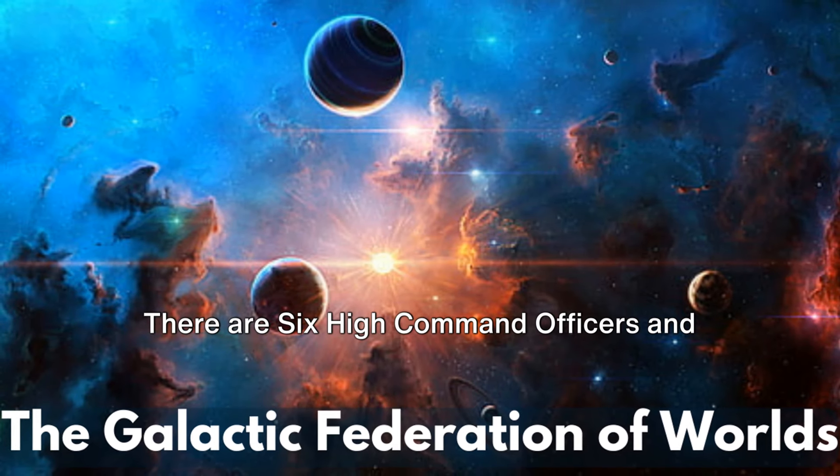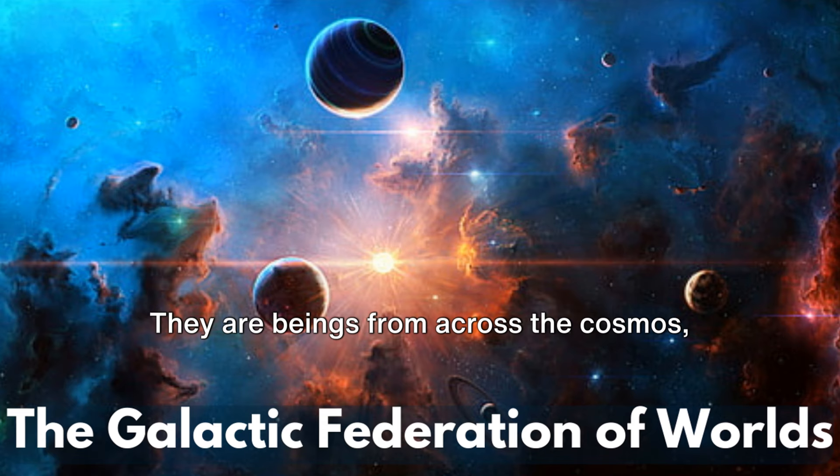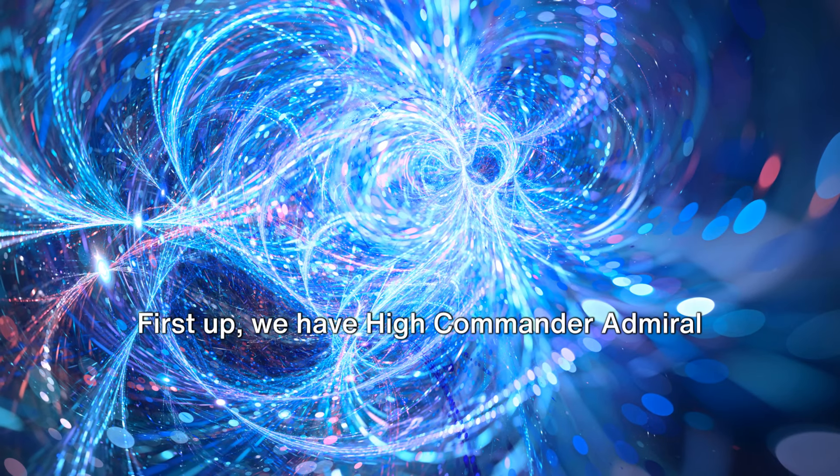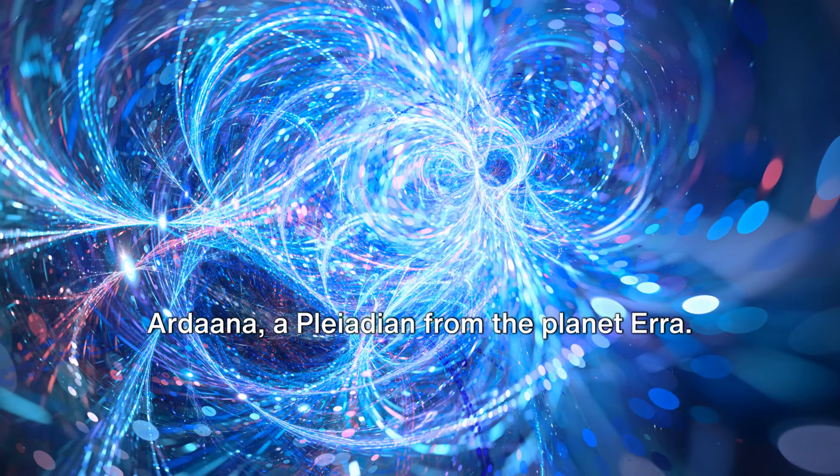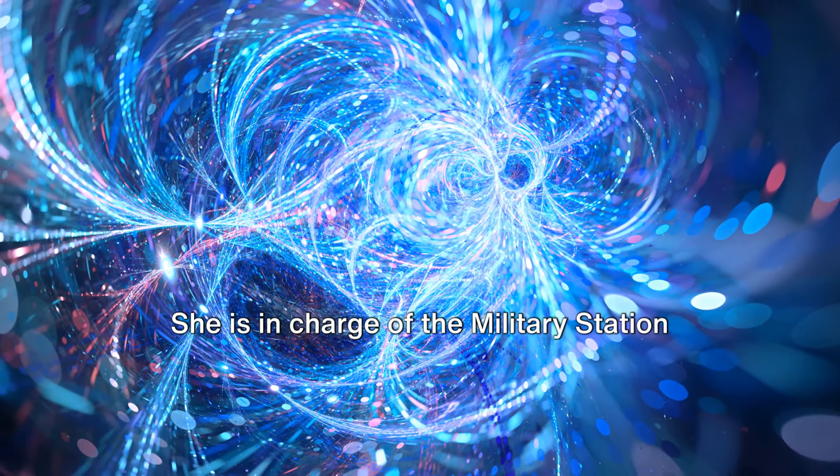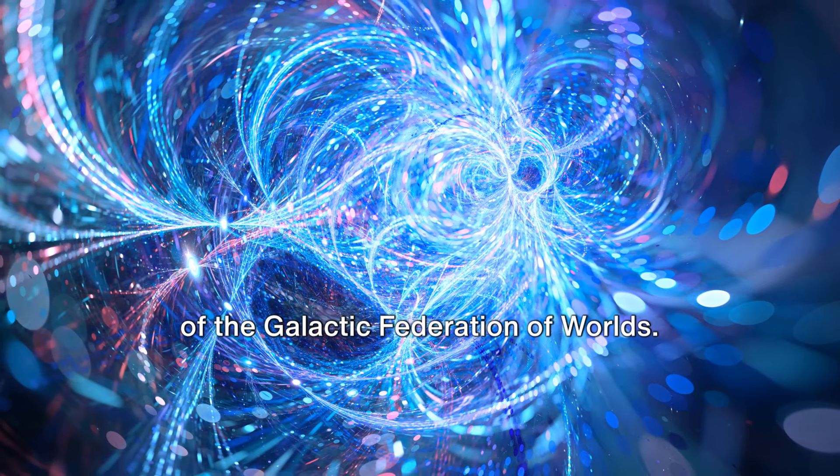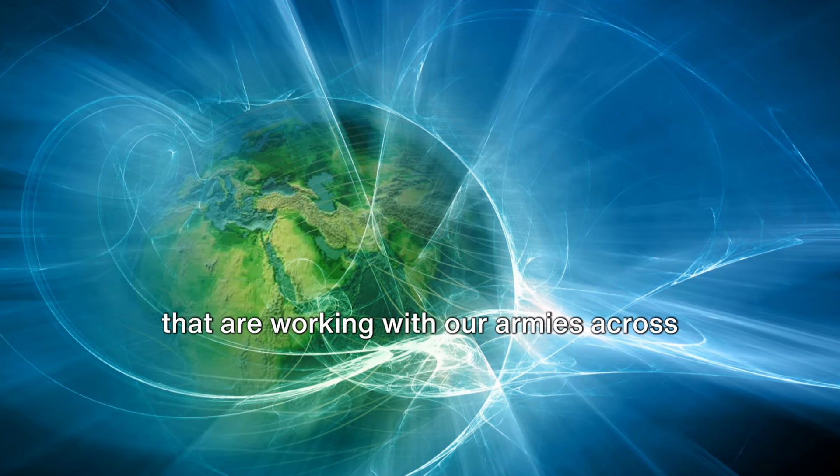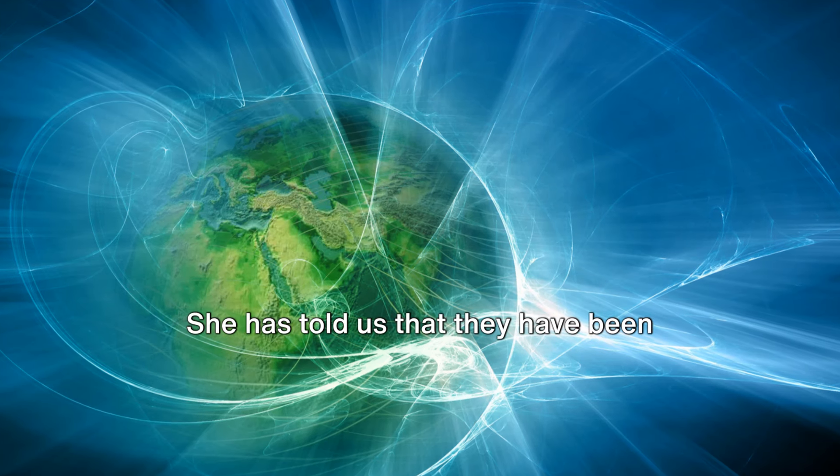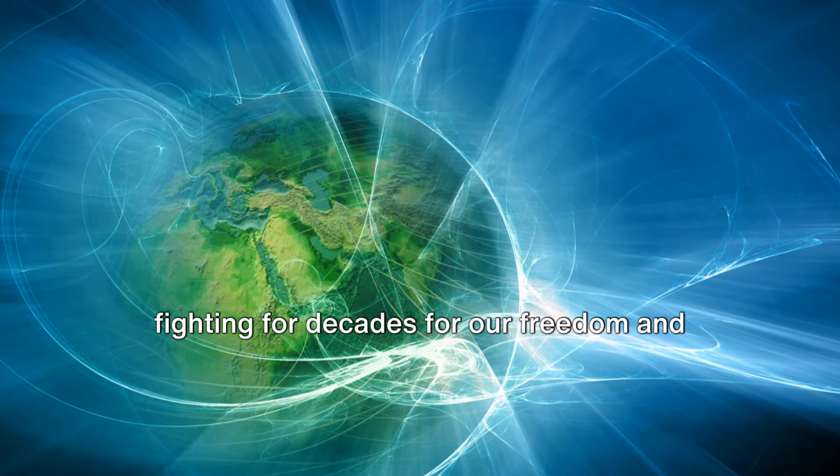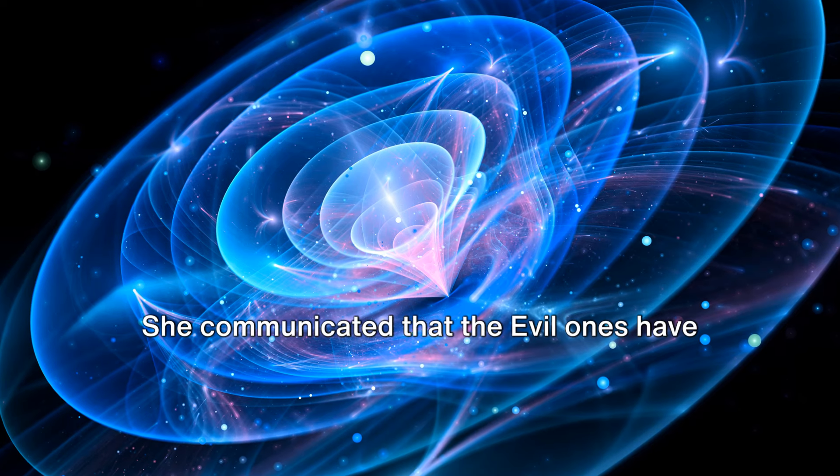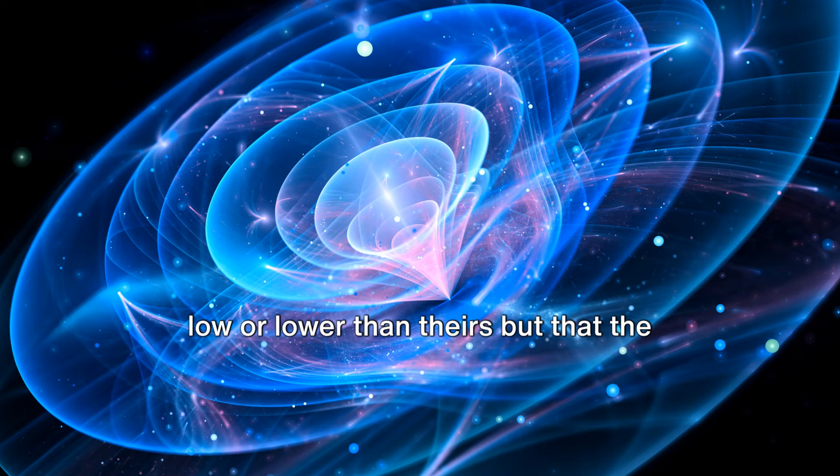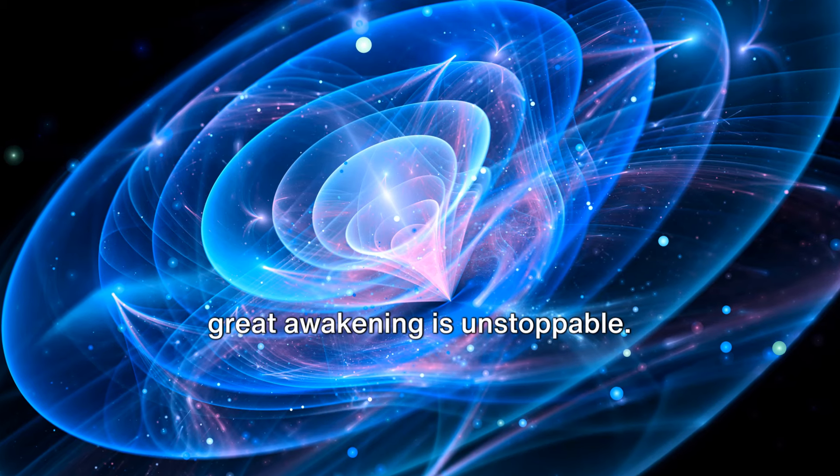There are six high command officers, and they are not your typical leaders. They are beings from across the cosmos, each possessing unique abilities and responsibilities. First up, we have High Commander Admiral Ardana, a Pleiadian from the planet era. She is in charge of the military station of the galactic federation of worlds. She commands the extraterrestrial armies that are working with our armies across the globe. She has told us that they have been fighting for decades for our freedom, and she asks for our trust. She communicated that the evil ones have had us locked in vibrations that are as low or lower than theirs, but that the great awakening is unstoppable.